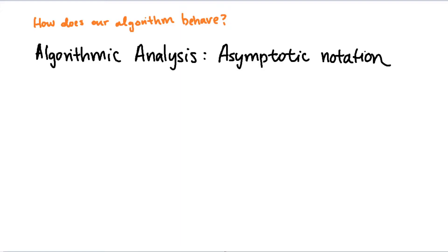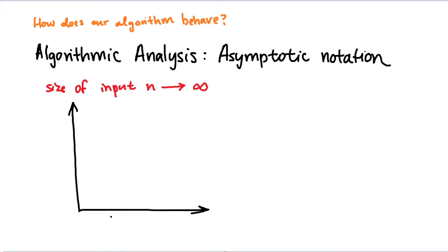So we want to figure out how does our algorithm behave as the size of our input — we'll call the size of our input n — as this approaches infinity, as it gets larger and larger. We can illustrate this using a graph, putting the size of the input n on the x-axis and what is known as the running time on the y-axis.